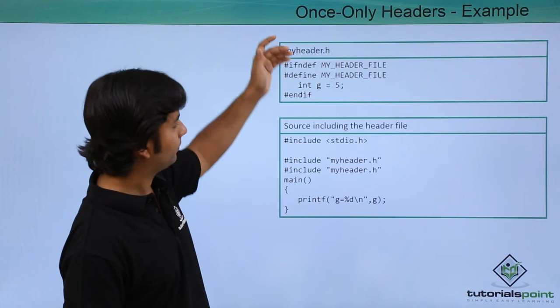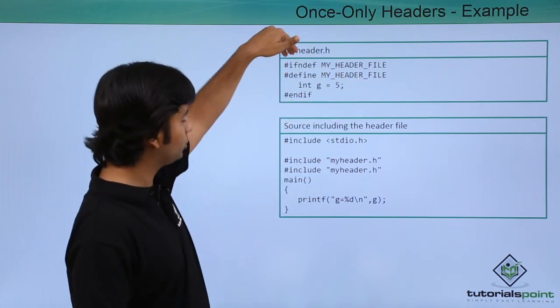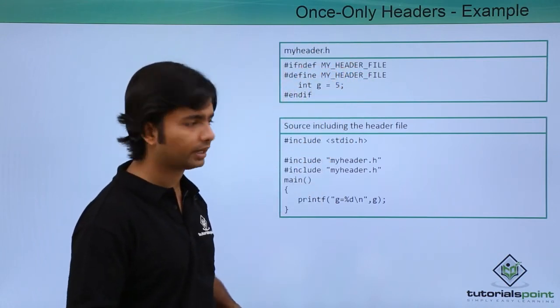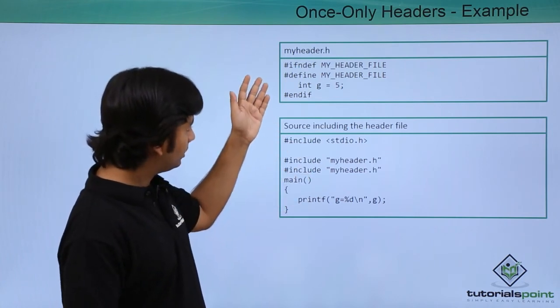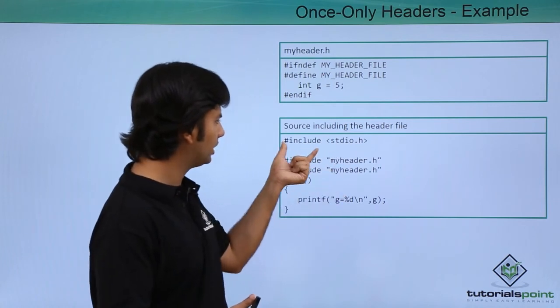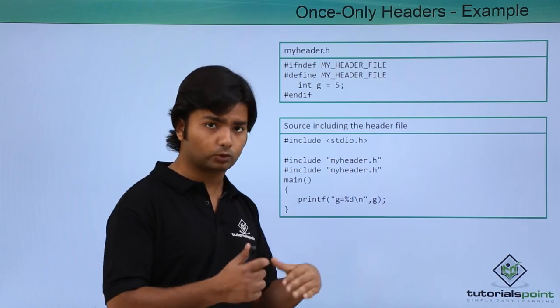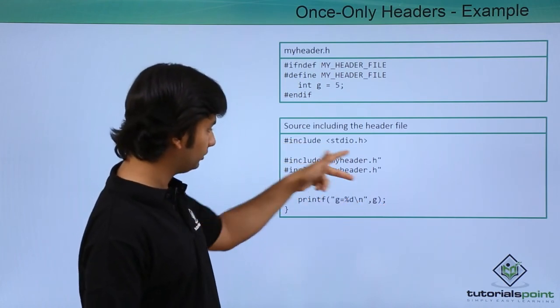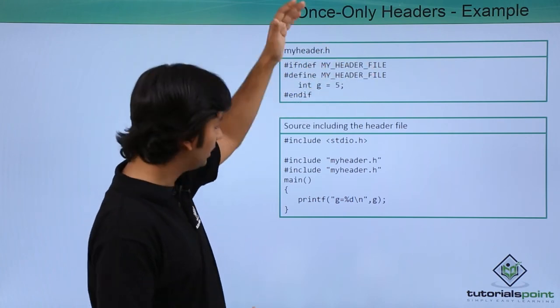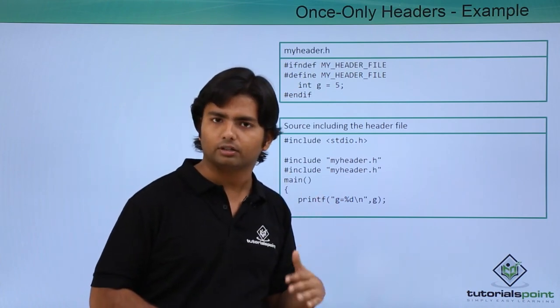Like here, you have my header.h header file inside which you have this. If it is not defined, then include that. We have also used some variables which will be used here. Hash include stdio.h, hash include my header.h, hash include my header.h. You see, this is included twice. If it is already included, then at the second time, it will not be included and your program will run smoothly.